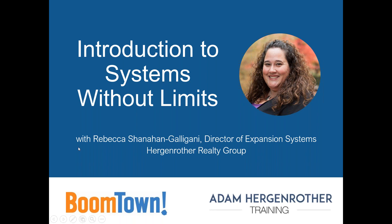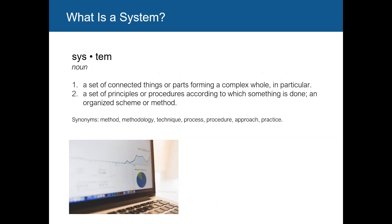So what is a system? A system is a set of connected things or parts that form a complex whole, or a set of principles or procedures according to which something is done — an organized scheme or method. The synonyms for system are how I look at systems. Some systems are going to be tangible checklists — one, two, three, four. Some are going to be about the method, some about how or why you do something, some about your approach, and some are things you'll do over and over again to come up with the best process and result for your organization.